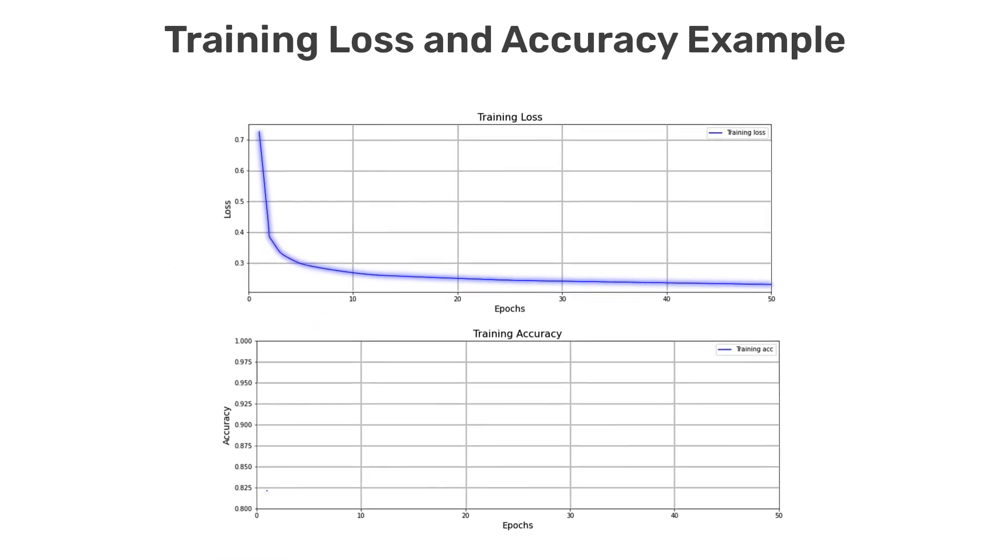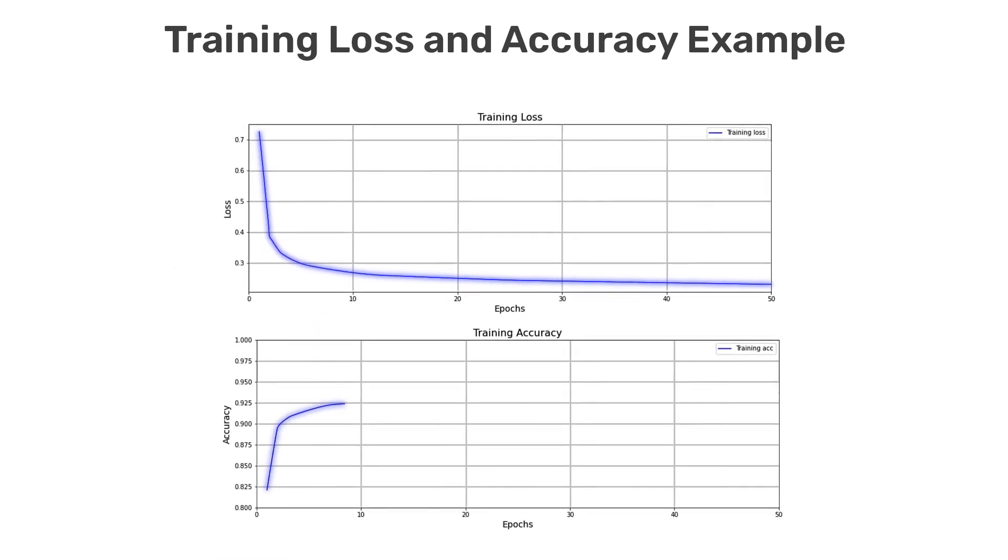It's also very common to plot training accuracy, and as you might expect, as the loss decreases, the accuracy tends to increase as shown in the second plot.